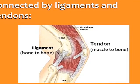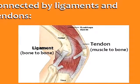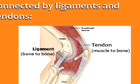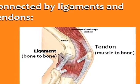Your muscles and bones are connected by ligaments, which connect bone to bone, and tendons, which connect muscle to bone.